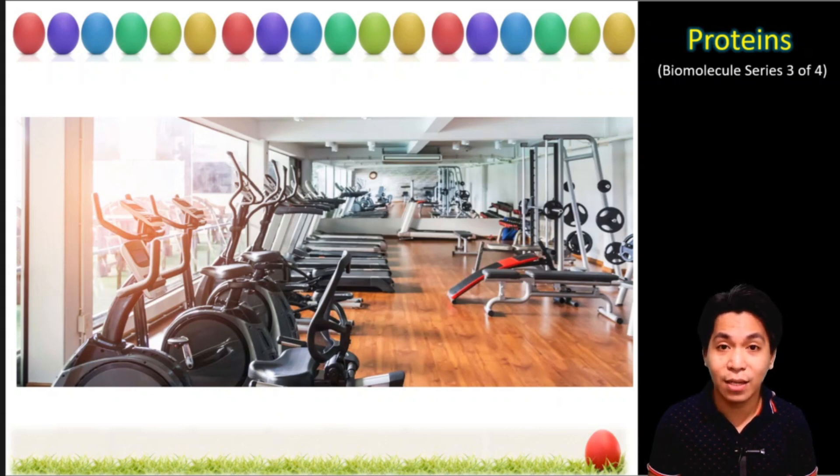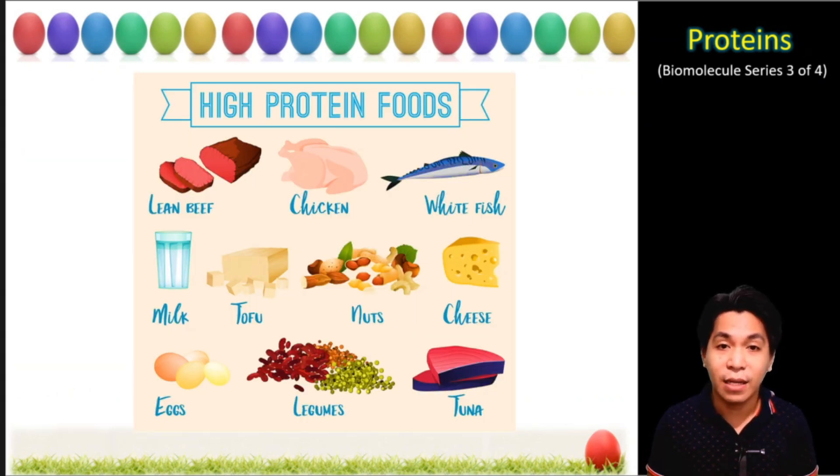If you're going to ask what are the sources of proteins, here are the following examples. You have lean beef, chicken, especially the white part of it, then white fish, milk, and many more. However, proteins exist not only for muscles but for other reasons also.